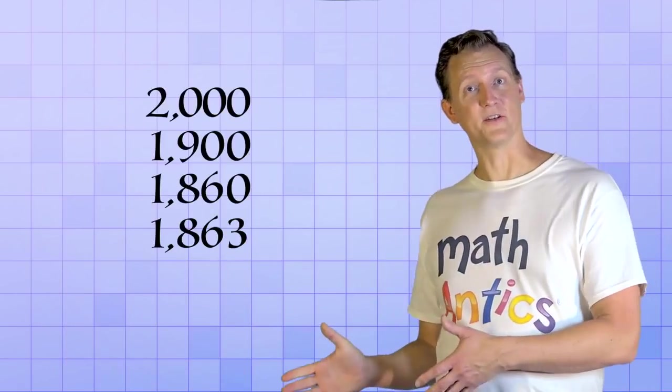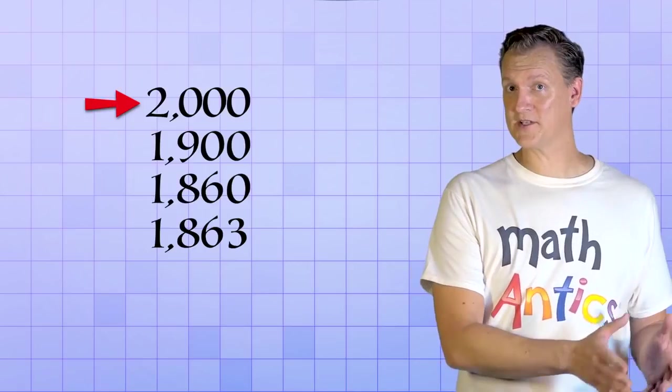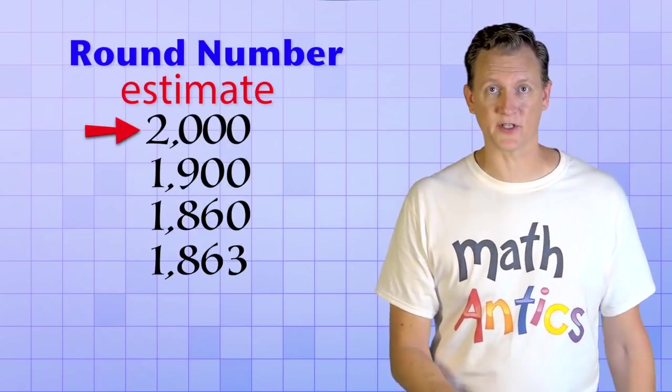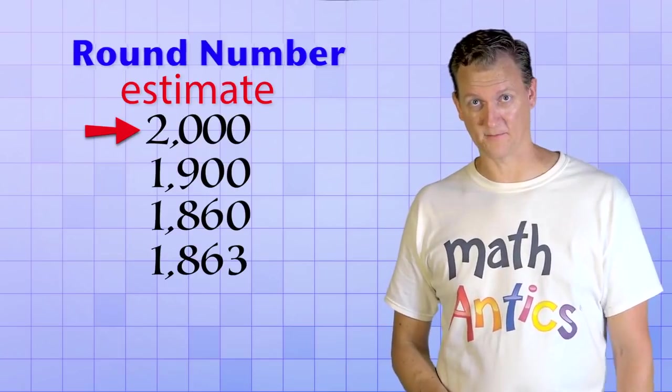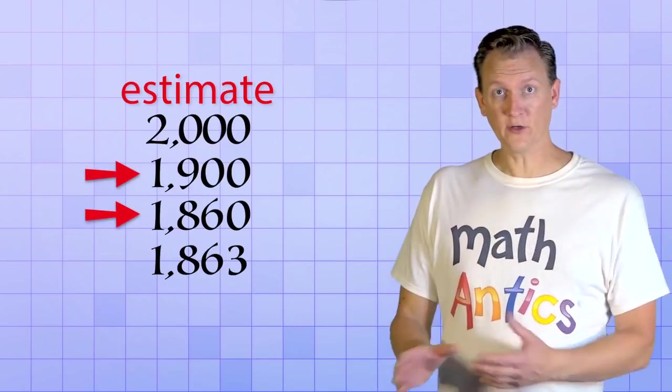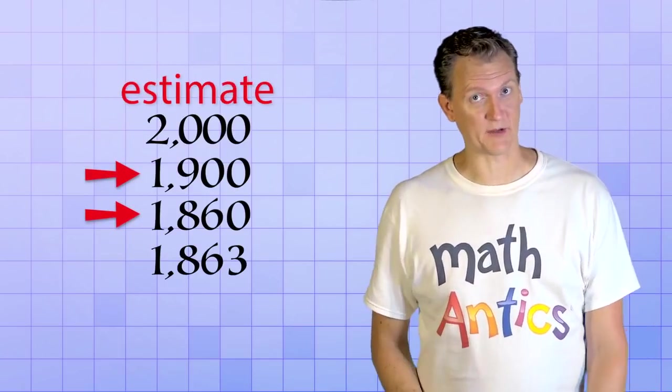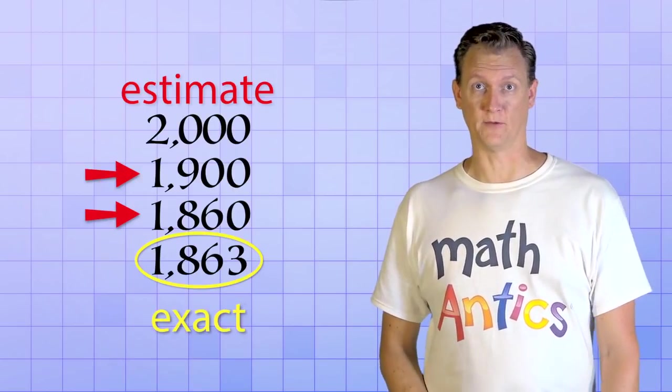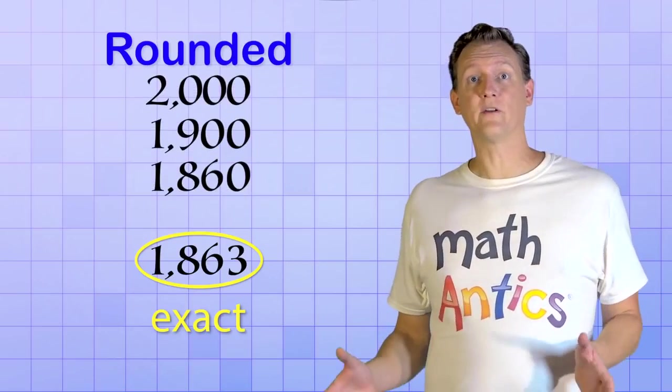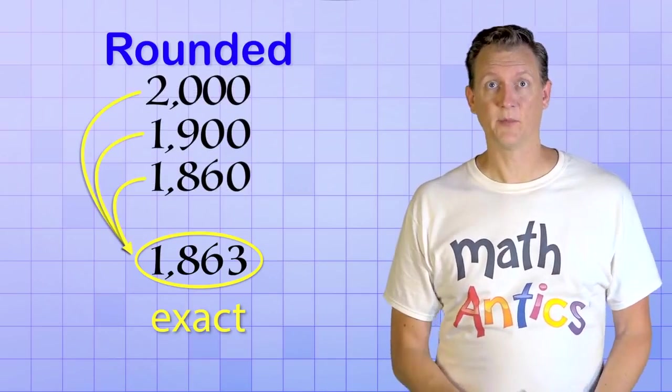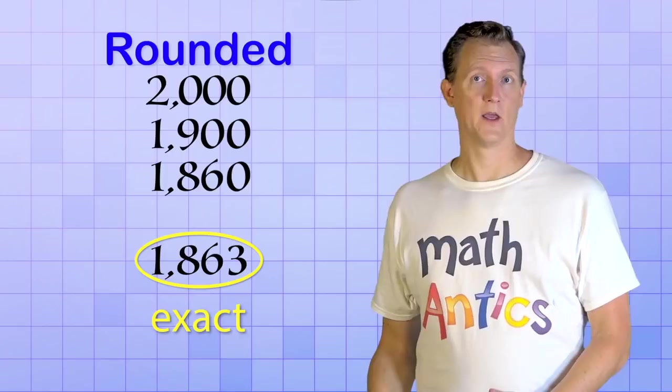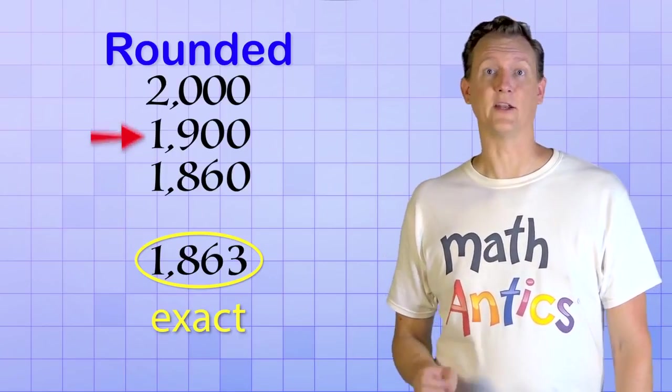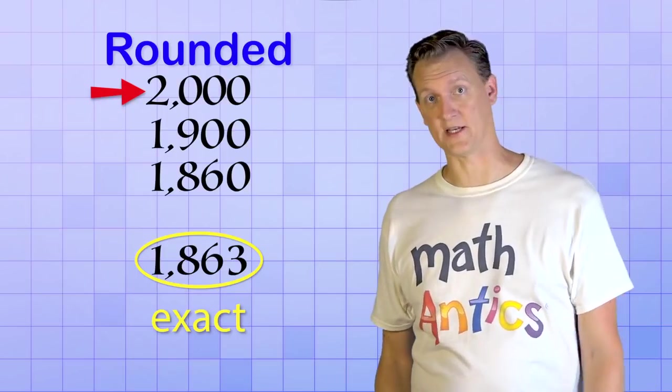See what I did there? At first, the number used to represent the students at high school was a round number. It was a good estimate of how many students there were, but it wasn't exact. The next two numbers were a little closer to the truth, but they were still estimates. Only the final number represented the exact amount of students at the school. All three of the estimates are rounded versions of the exact count, but they have different levels of precision. 1,860 was the most precise estimate and 2,000 was the least precise estimate.